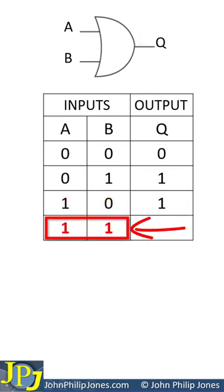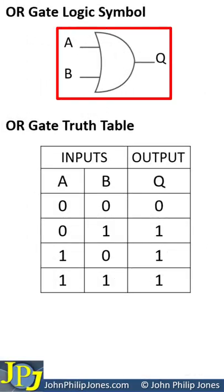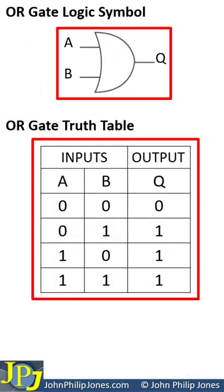This is the last possible state that could appear at the input to the OR gate, and we'll get a 1 at the output, which I'm showing here in the truth table. We've got the OR gate logic symbol and the OR gate truth table. Memorise these.